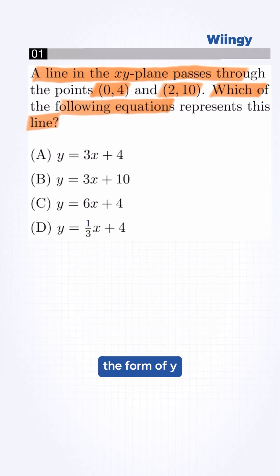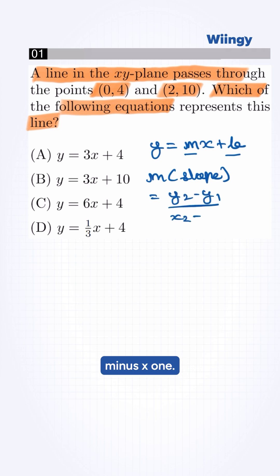The equation is in the form of y is equal to mx plus b. Here we need to find m and b first, so we will find m which is slope. The formula is y2 minus y1 by x2 minus x1.